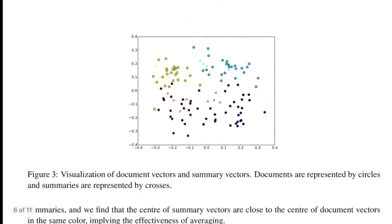As shown in the diagram, document vectors are represented by circles and summary vectors by crosses. There is a clear overlap between the space where summaries and documents reside, which gives an idea of how correct the document model is.